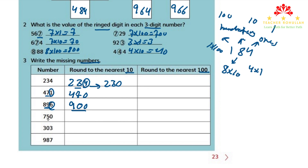The fourth number is 750: 5 is underlined and 0 is circled. Since 0 is 4 or less, 750 rounds to 750. The fifth number is 303: we underline 0 and circle 3. Since 3 is 4 or less, the number rounds to 300. The last number is 987: we underline 8 in the tens place and circle 7 in the ones place. Since 7 is 5 or more, we round up and get 990.